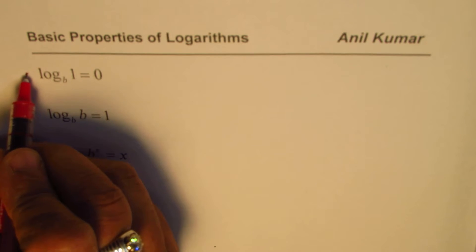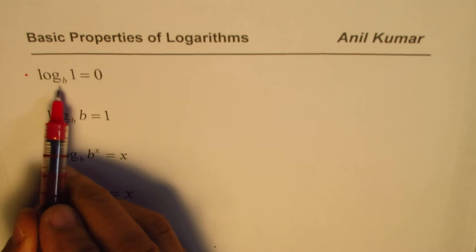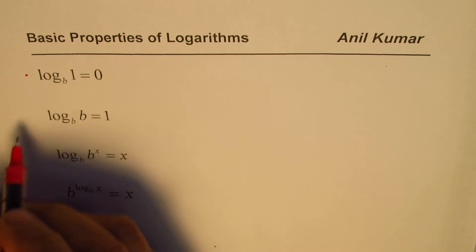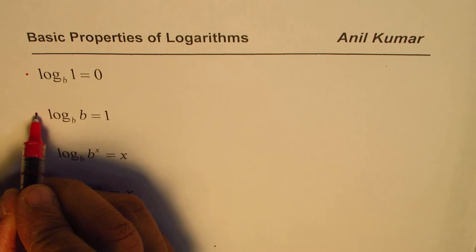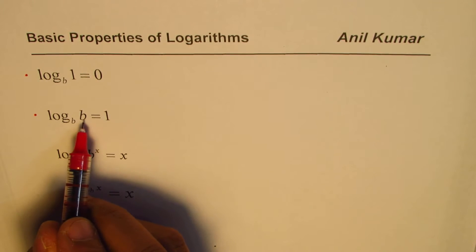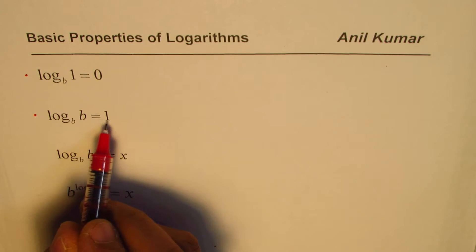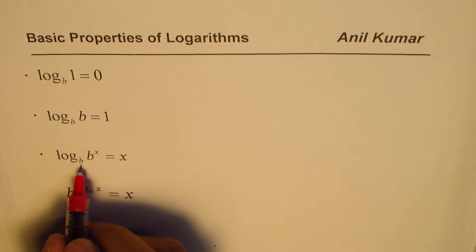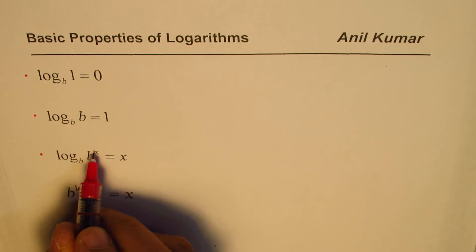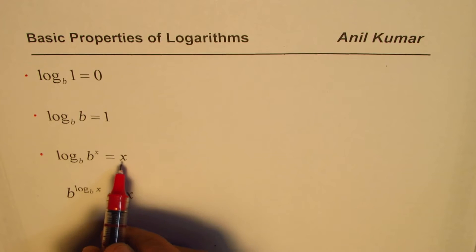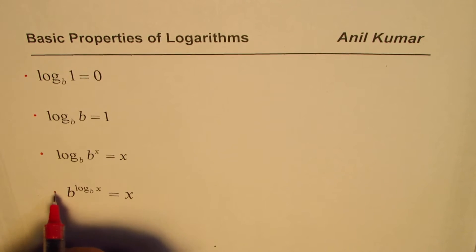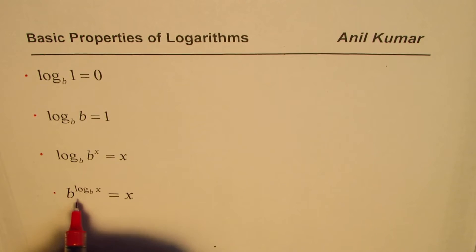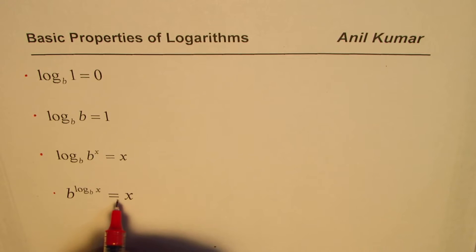The first one is log to the base b of 1 is always 0. Then log to the base b of b is equal to 1. Log to the base b of b to the power of x is equal to x. And b to the power of log_b(x) is equal to x.